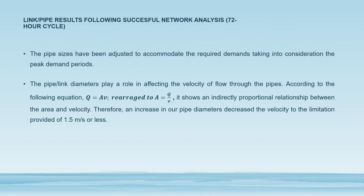Pipe or link results following the successful network analysis of the 72-hour cycle: the pipe sizes have been adjusted to accommodate the required demands, taking into consideration the peak demand period. The pipe diameter plays a huge role in affecting the velocity of flow through the pipes, using the equation: flow equals area times velocity. This equation shows an inversely proportional relationship between the area and the velocity. Therefore, an increase in pipe diameters decreases the velocity to the limit of 1.5 meters per second or less.